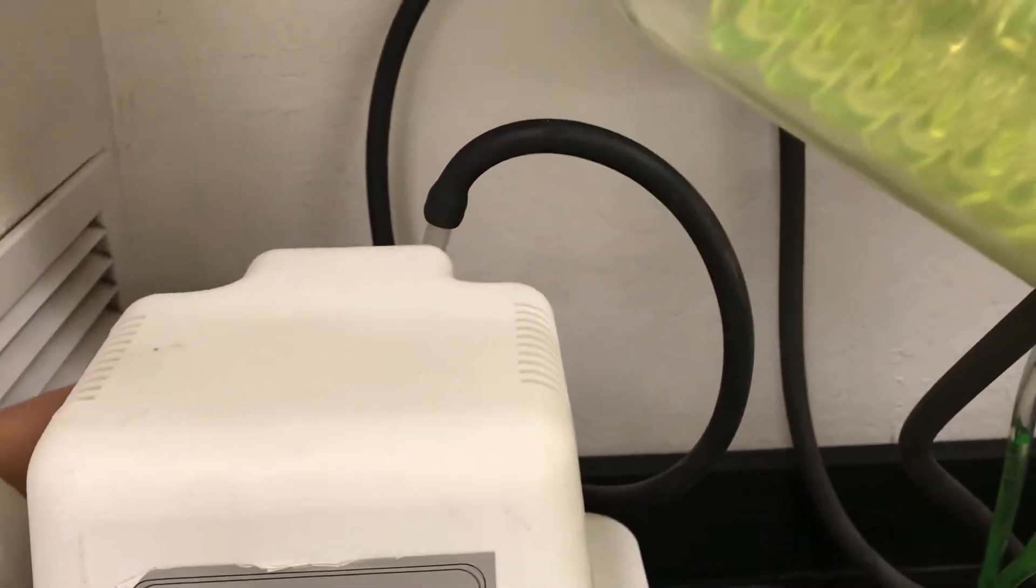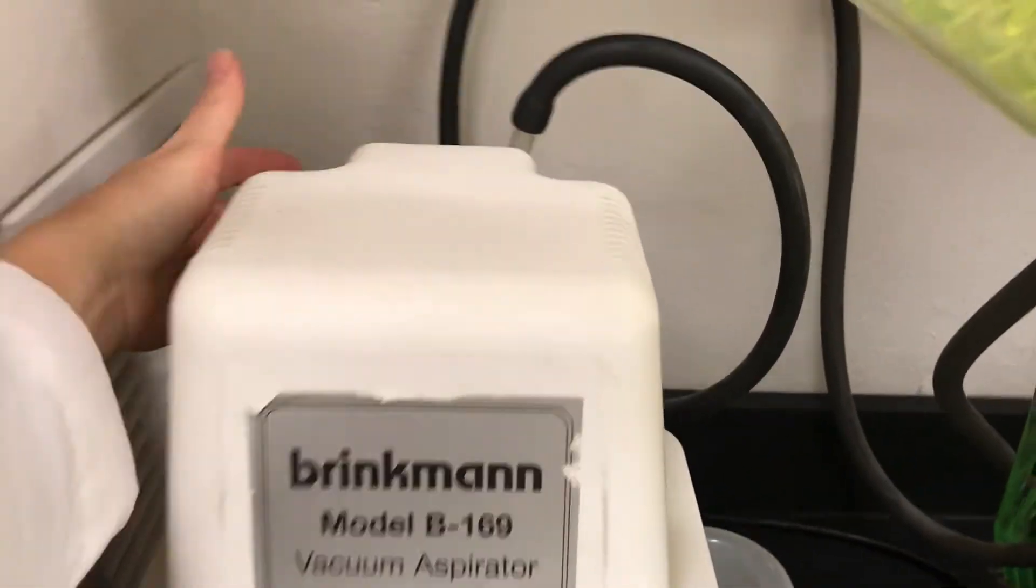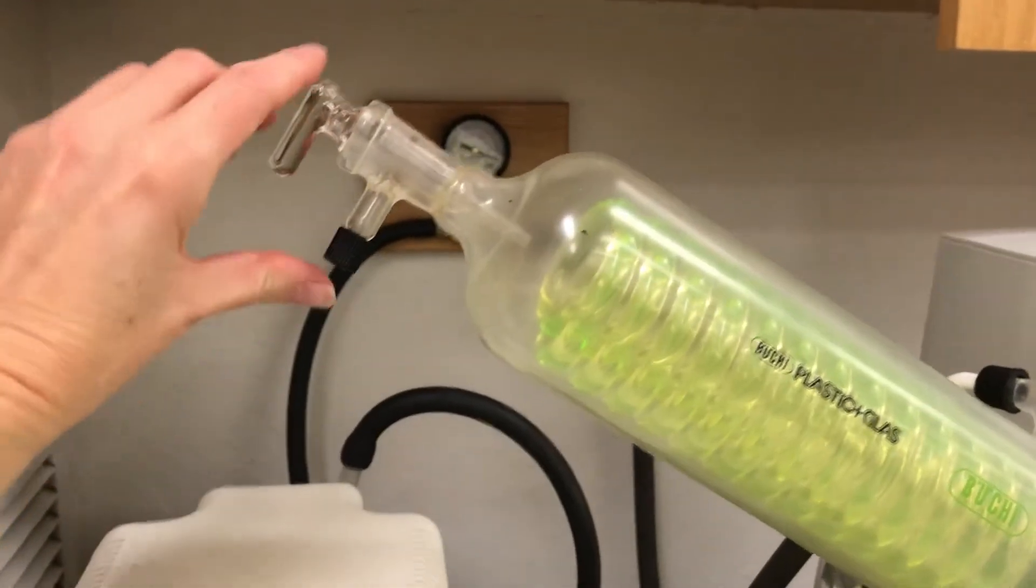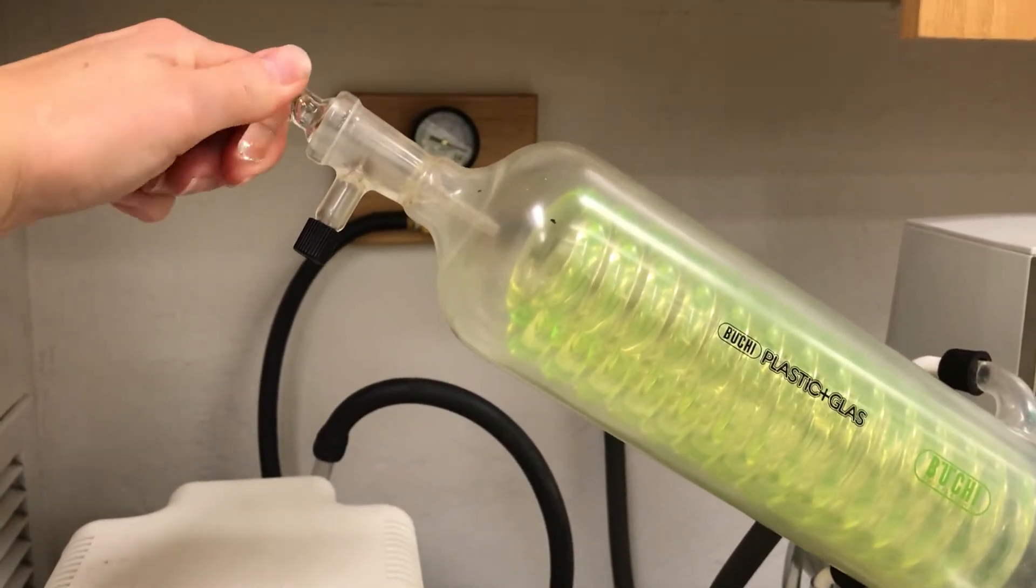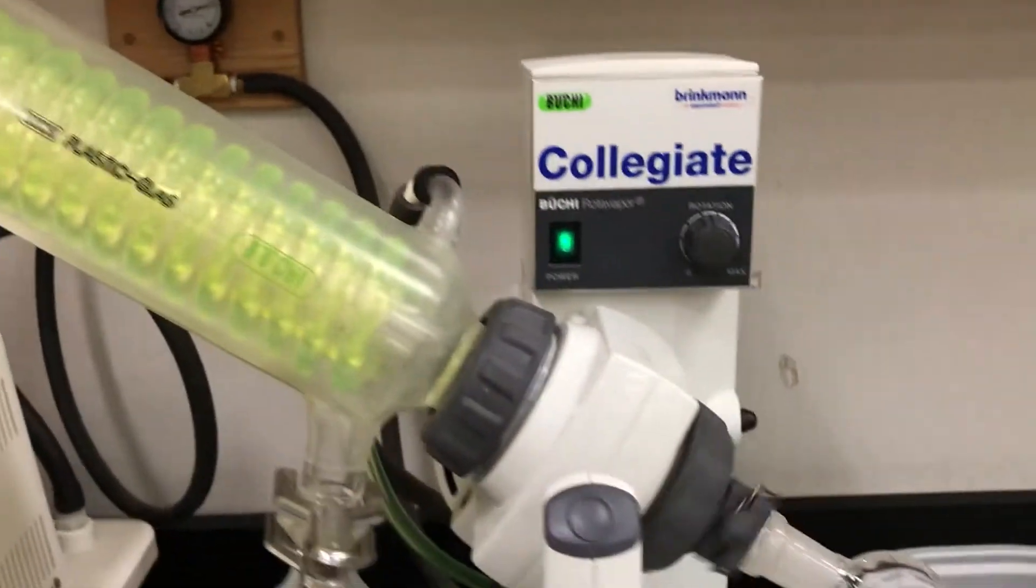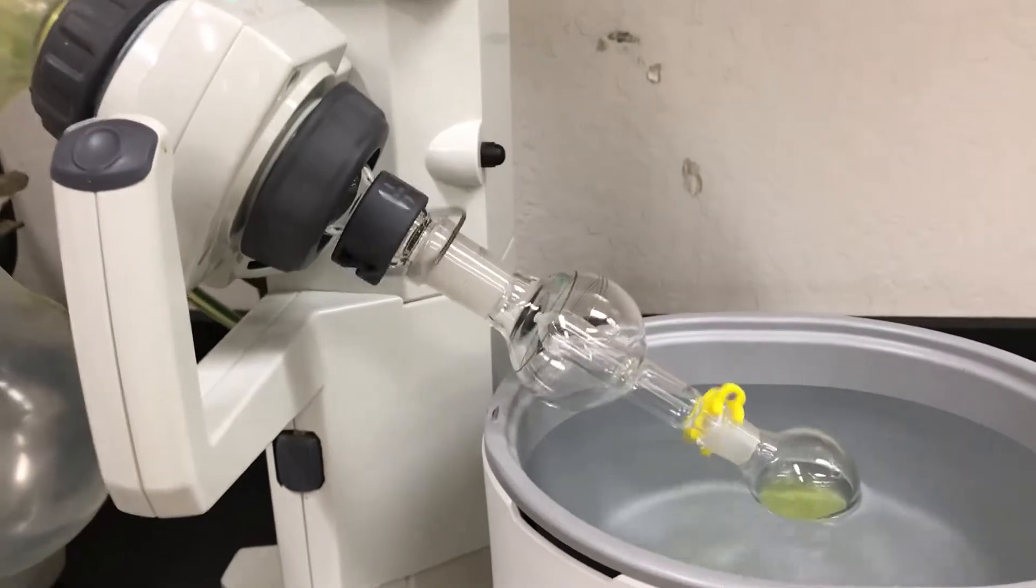Then you can turn on the vacuum and even when the vacuum is going normally you start with an open system. So this right here you can hear it's open. You're going to turn it 90 degrees to close the system and then the pressure is starting to lower inside of the instrument.